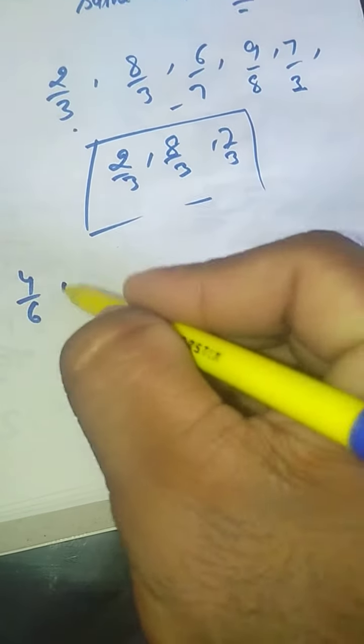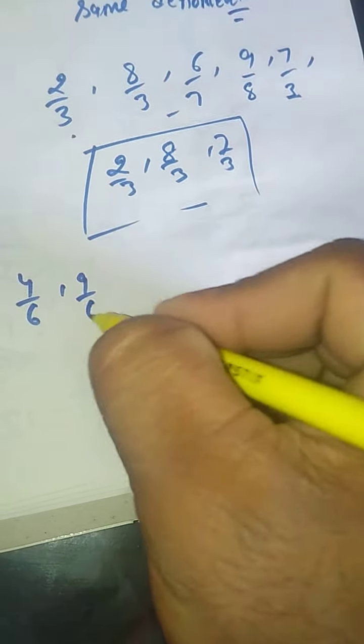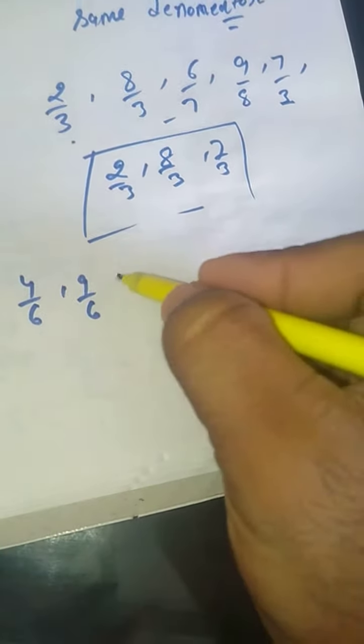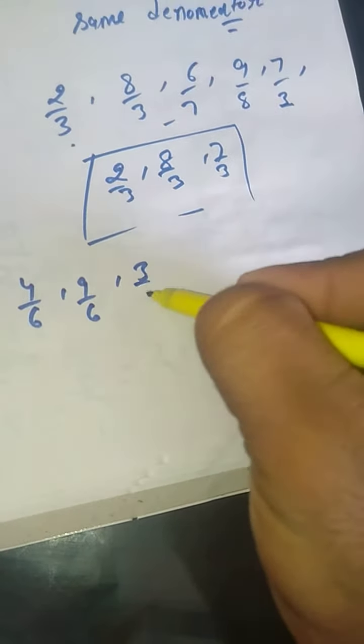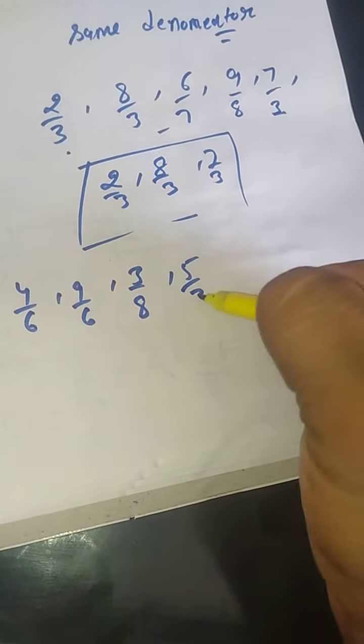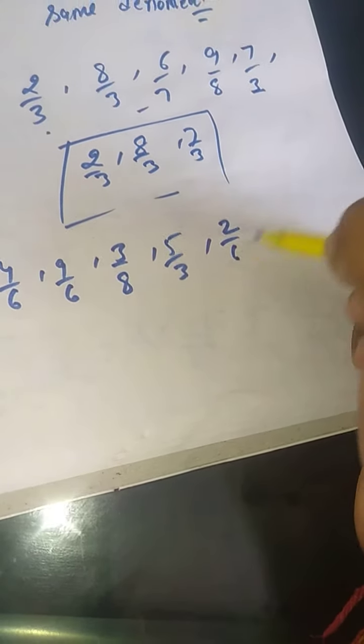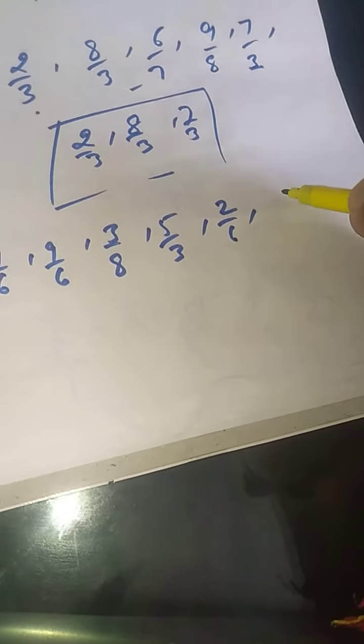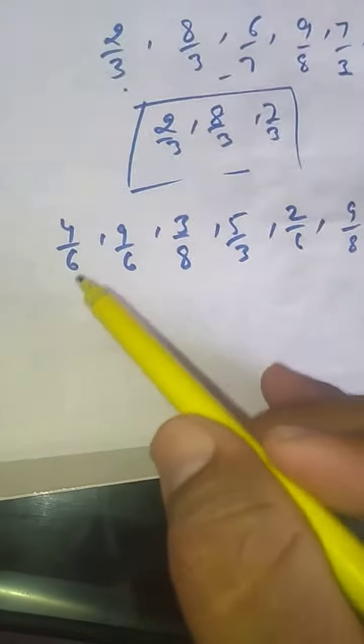4/6, 9/6, 3/8, 5/3, 2/6, 9/8, and 5/6. The same denominator here is 6 — so 4/6, 9/6, 2/6, and 5/6 are Like Fractions.